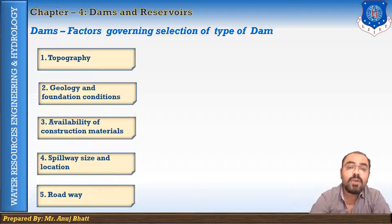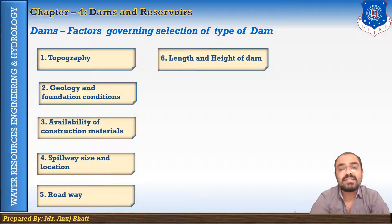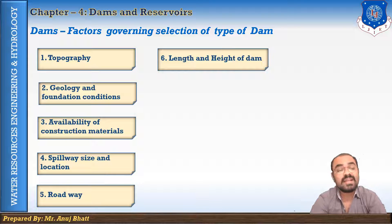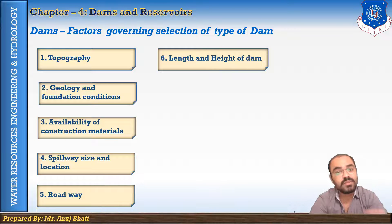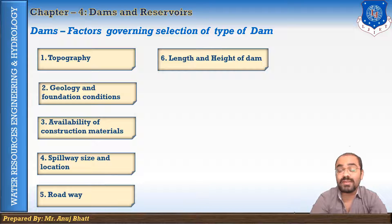The next factor is the roadway. If a roadway is to be passed over the top of the dam, an earthen dam or gravity dam can be preferred. The next factor is the length and height of the dam. According to the dimensions, it may be necessary to change the type of dam selected. If the length of the dam is very long and the height is low, an earthen dam could be preferred. If the length is small but the height is more, a gravity dam would be a better choice.